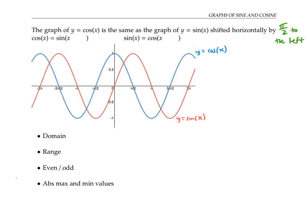So we can write cosine of x as the sine function of x plus pi over two, since adding pi over two on the inside moves the graph horizontally to the left by pi over two.